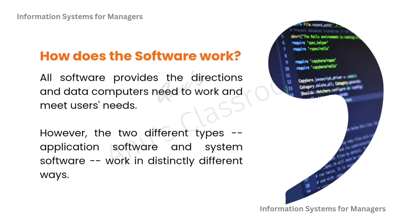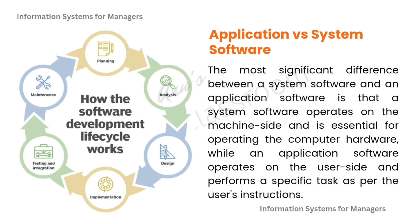All softwares provide the directions and data that computers need to work and meet users' needs. However, application software and system software work in distinctly different ways. The most significant difference is that system software operates on the machine side and is essential for operating computer hardware, while application software operates on the user side and performs a specific task as per the user's instruction.